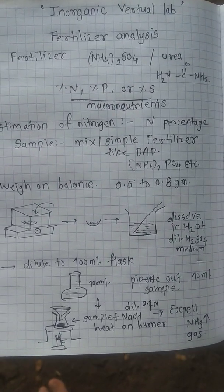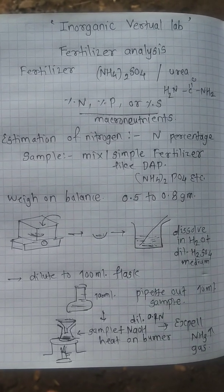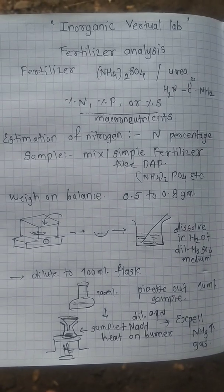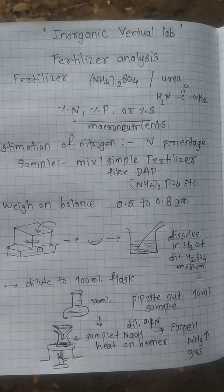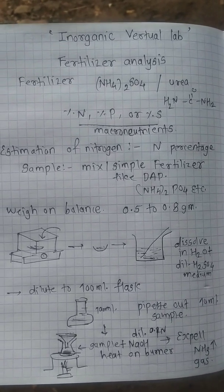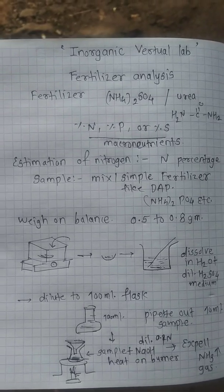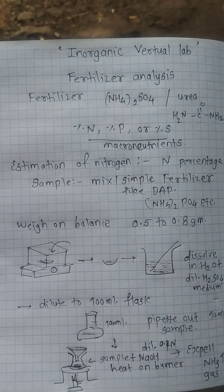Fertilizer is the sample which increases content of macronutrients in the soil. Types of fertilizers include simple and complex mix fertilizers. Fertilizer especially contains nitrogen, phosphorus, and sulfur. Examples include ammonium sulfate, urea that contains nitrogen or sulfur, and some fertilizers contain phosphorus as phosphates, di-ammonium phosphate.